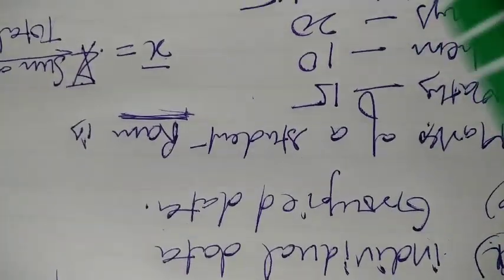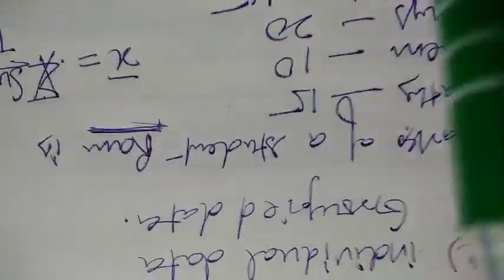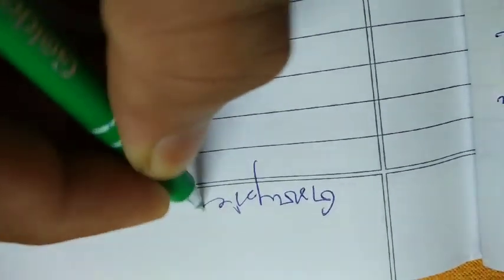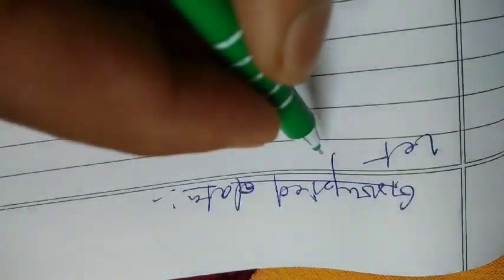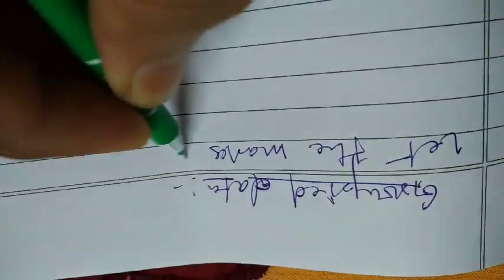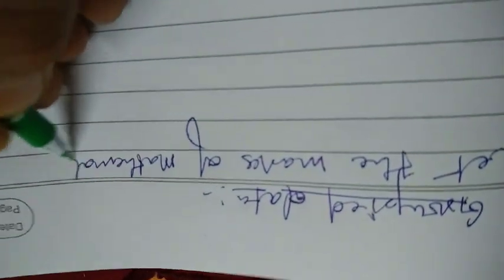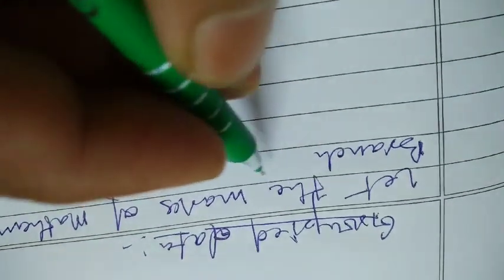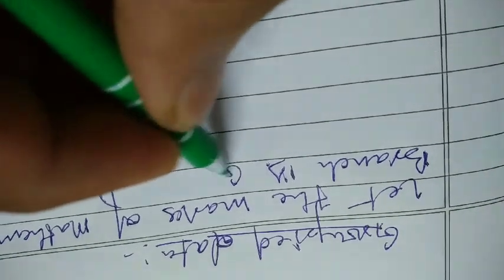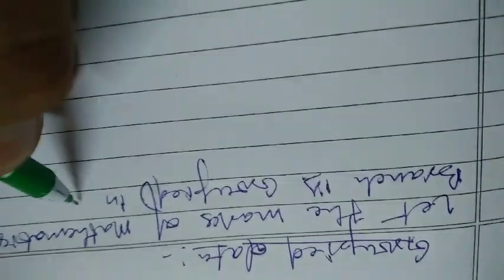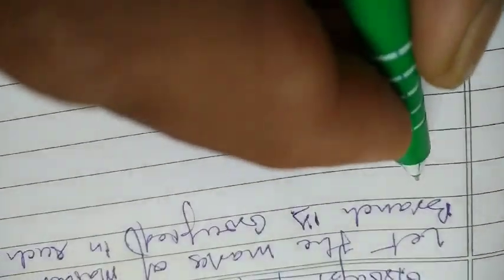Let us take another example in which we will discuss about grouped data. So, let us see what is grouped data. Let the marks of Mathematics of CS branch be required in such a way: Mathematics out of 50, 0 to 10 marks, 10 to 20 marks, 20 to 30 marks, 30 to 40 marks, 40 to 50 marks.